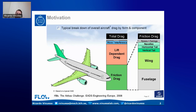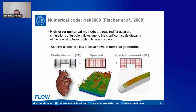These two aspects of the total drag can be studied with high-fidelity simulations. The code we use for our numerical simulations is Nek5000, a spectral element code developed by Fischer and others, which combines the geometrical flexibility of finite elements and the convergence properties of high-order spectral methods. This makes it a very nice candidate to perform DNS or high-fidelity large-scale simulations of turbulent flows at high Reynolds numbers in complex geometries.